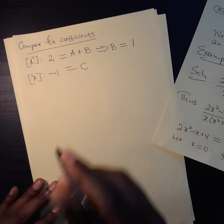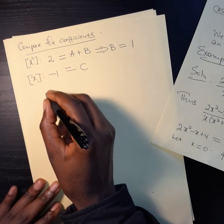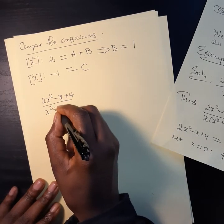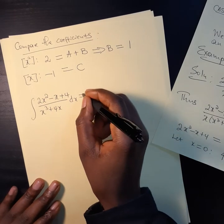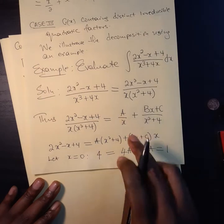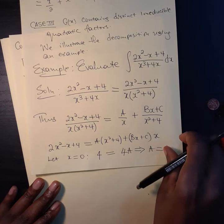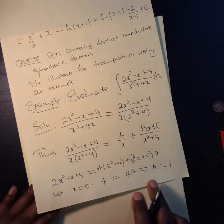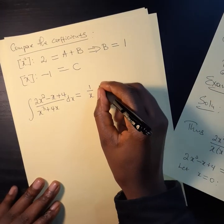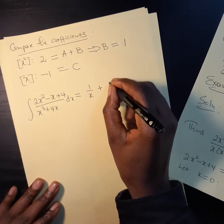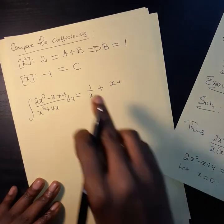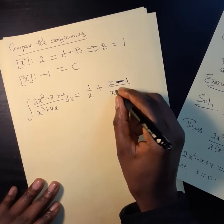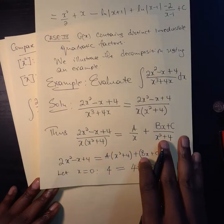So, this is telling us that what we started off with — 2x squared minus x plus 4 over x cubed plus 4x — is equal to a over x. We found a to be 1, so it's 1 over x, plus b over x squared plus 4. We found b to be 1, and c we found to be minus 1, so we get minus 1 over x squared plus 4.